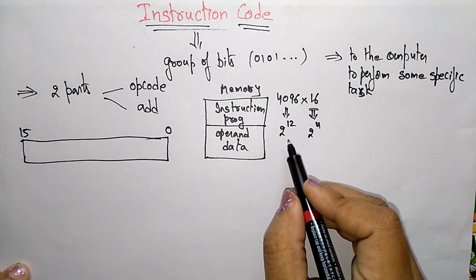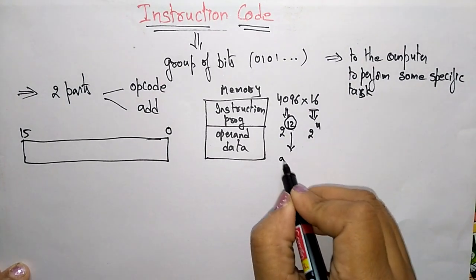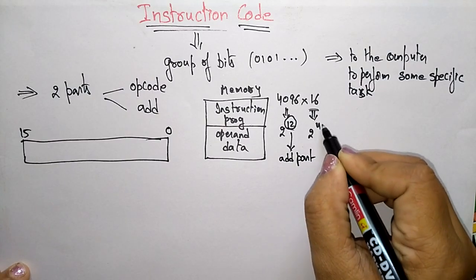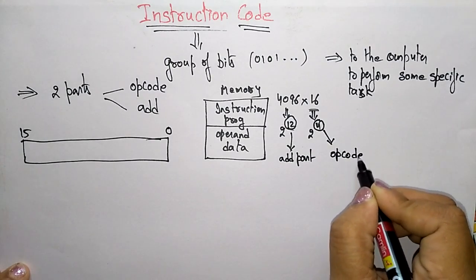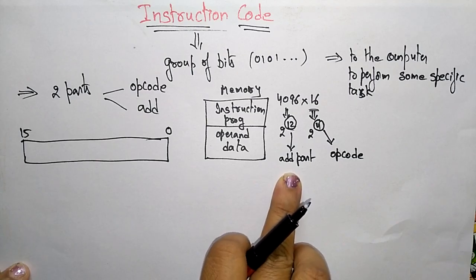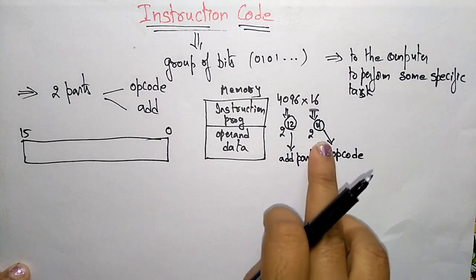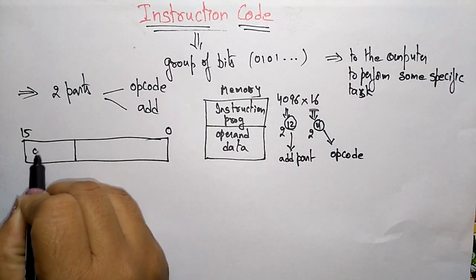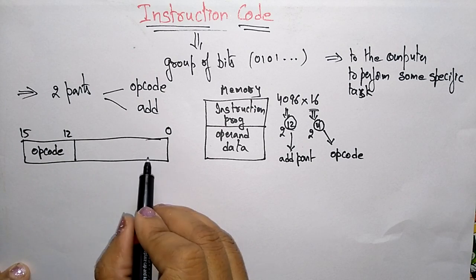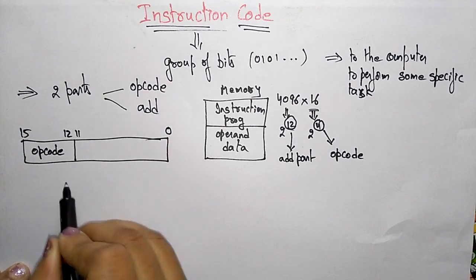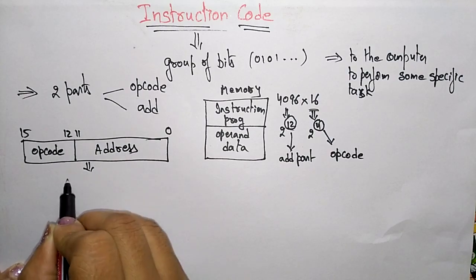4096 means 2 to the power 12, and 16 means 2 to the power 4. So the 12 bits specify the address part and the 4 bits specify the op code. The instruction code is divided into two parts: 4 bits for op code (bits 12 to 15) and 12 bits for the address part (bits 0 to 11). This is the instruction format.